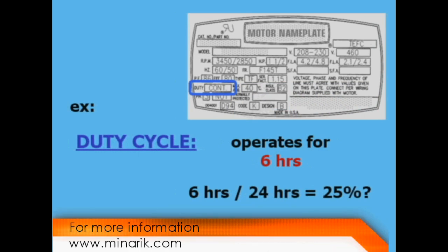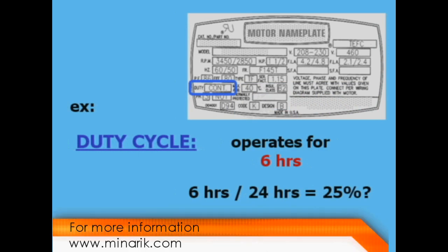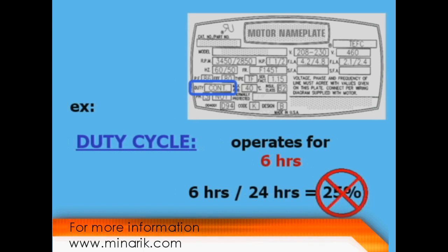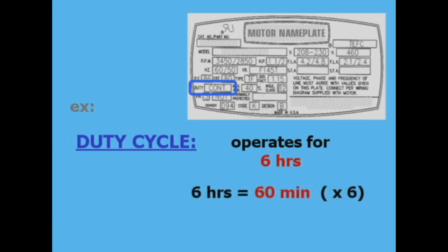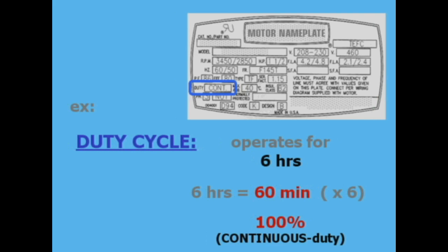For example, if a motor will need to run six hours in a 24-hour day, some might think it could be rated at 25% duty cycle. However, since the motor will run for at least 60 continuous minutes, it needs to be rated 100% or continuous duty.